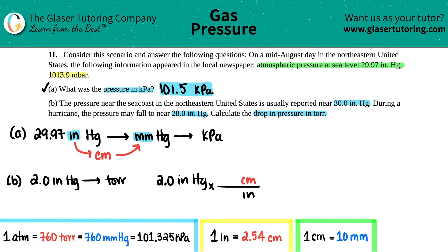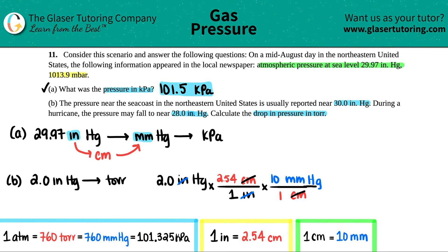For every 2.54 centimeters there is one inch. Then multiply by another ratio: centimeters on the bottom, millimeters on top. Remember: 1 centimeter equals 10 millimeters. The centimeters cancel out and now you're left with millimeters of mercury.